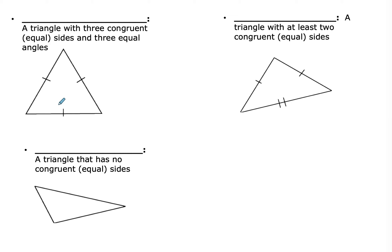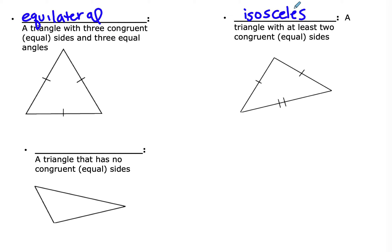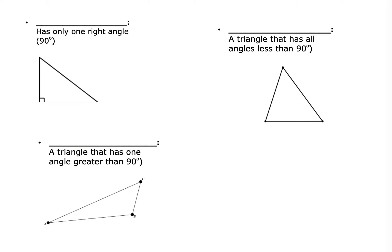A triangle with three congruent sides and three equal angles is an equilateral triangle. A triangle with at least two congruent sides is isosceles. A triangle with no equal sides is called scalene. When naming a triangle, we pick one of these names to describe the sides and also a name to describe the angles: right triangle has one right angle, acute triangle has all angles less than 90 degrees, and obtuse has one angle greater than 90.